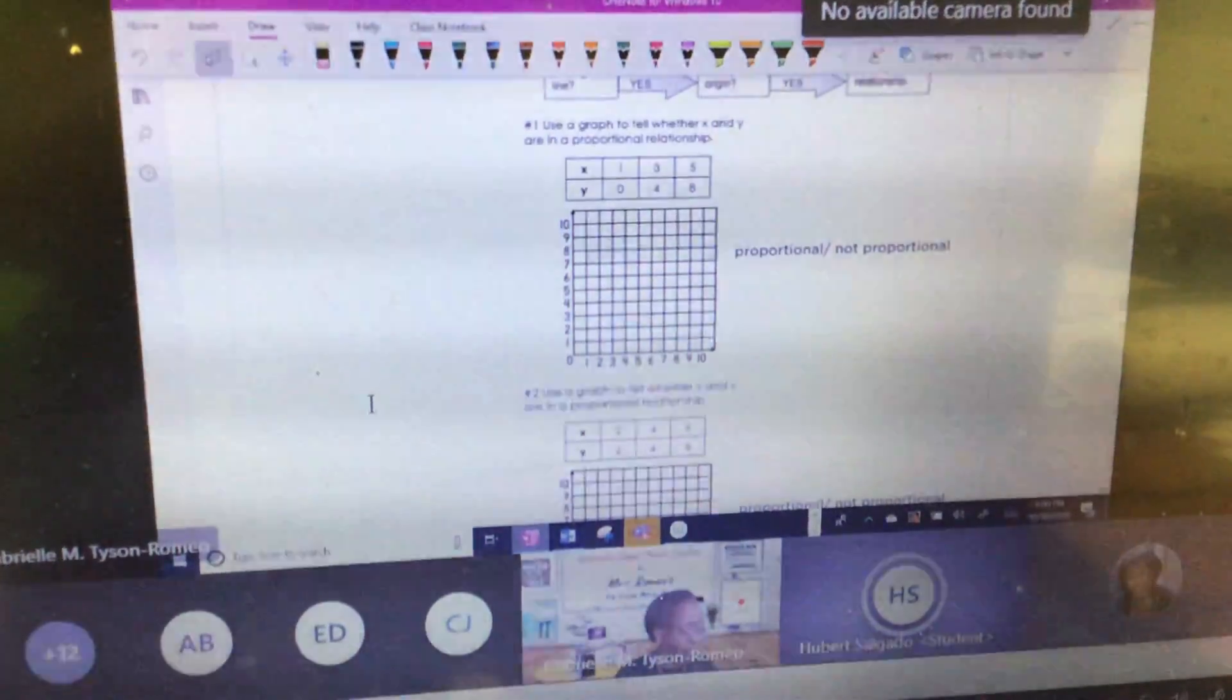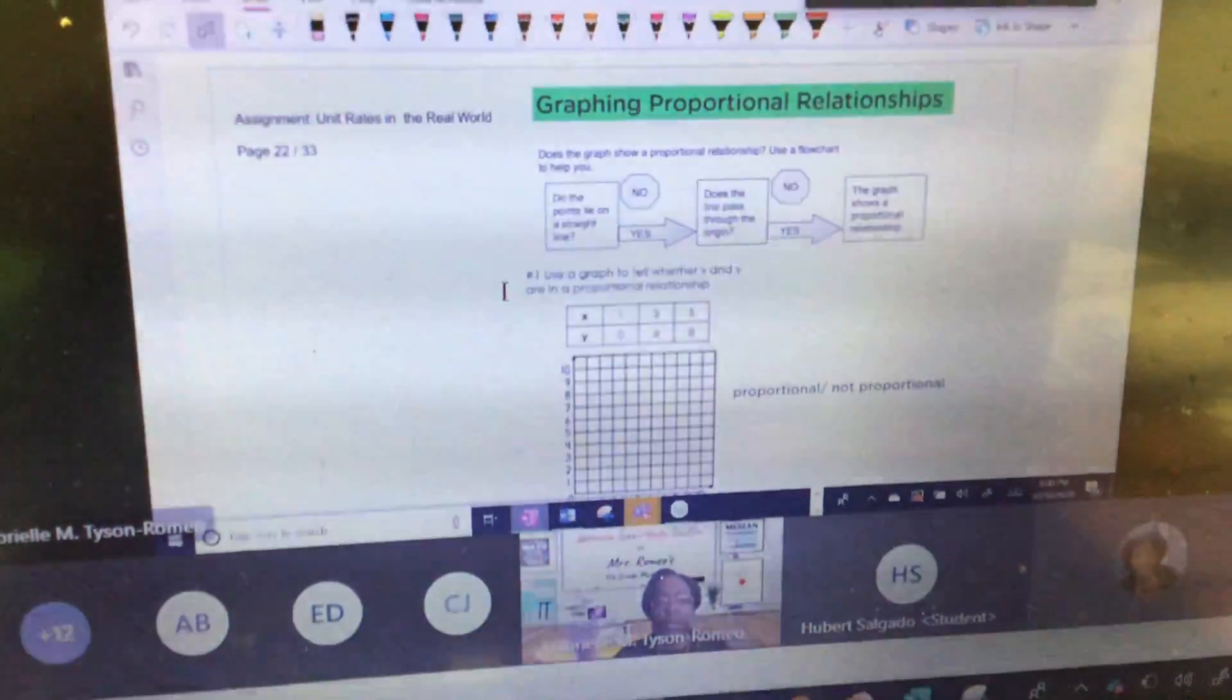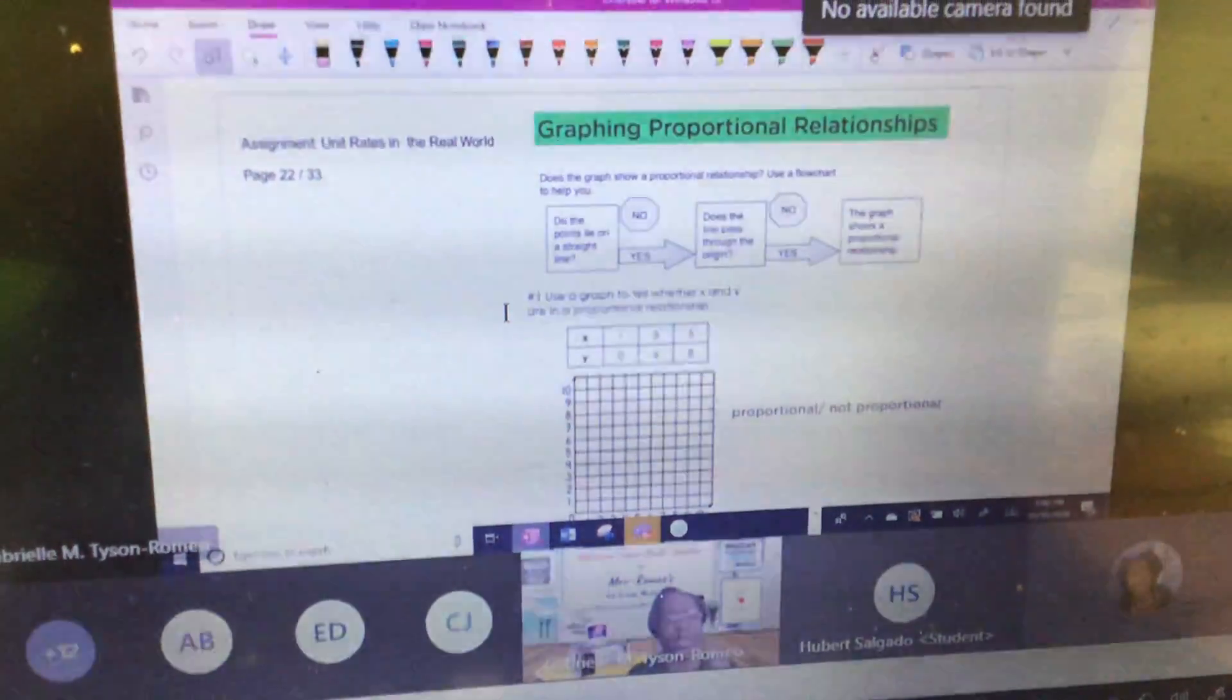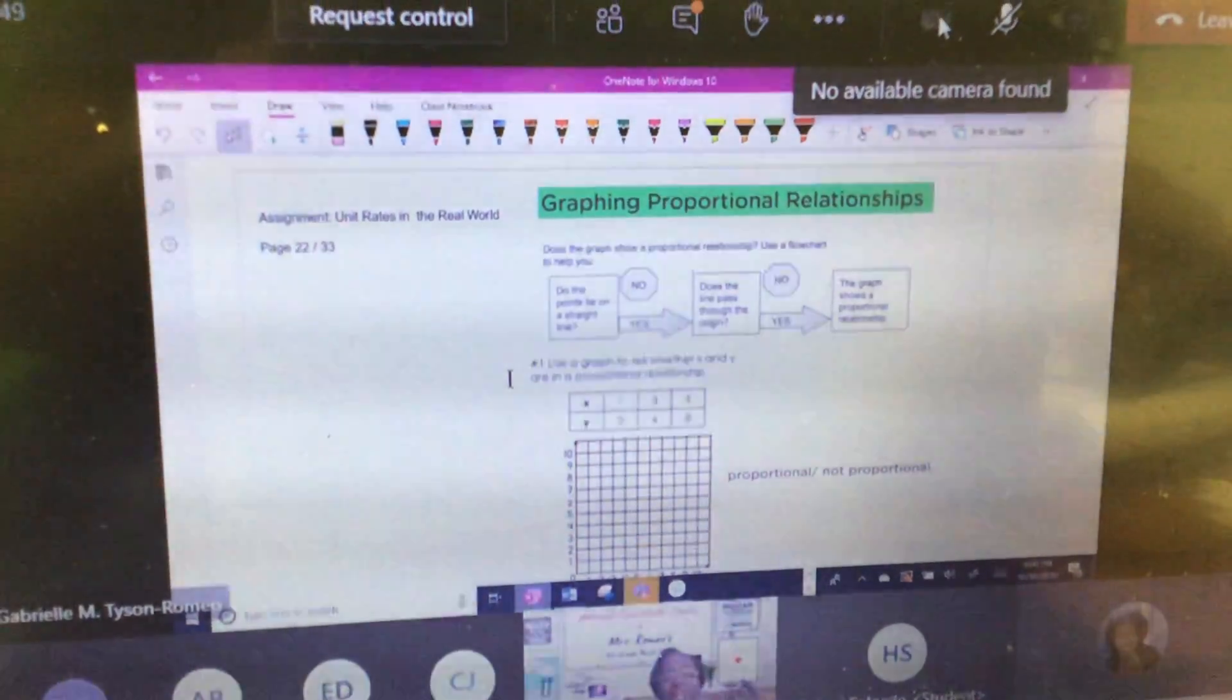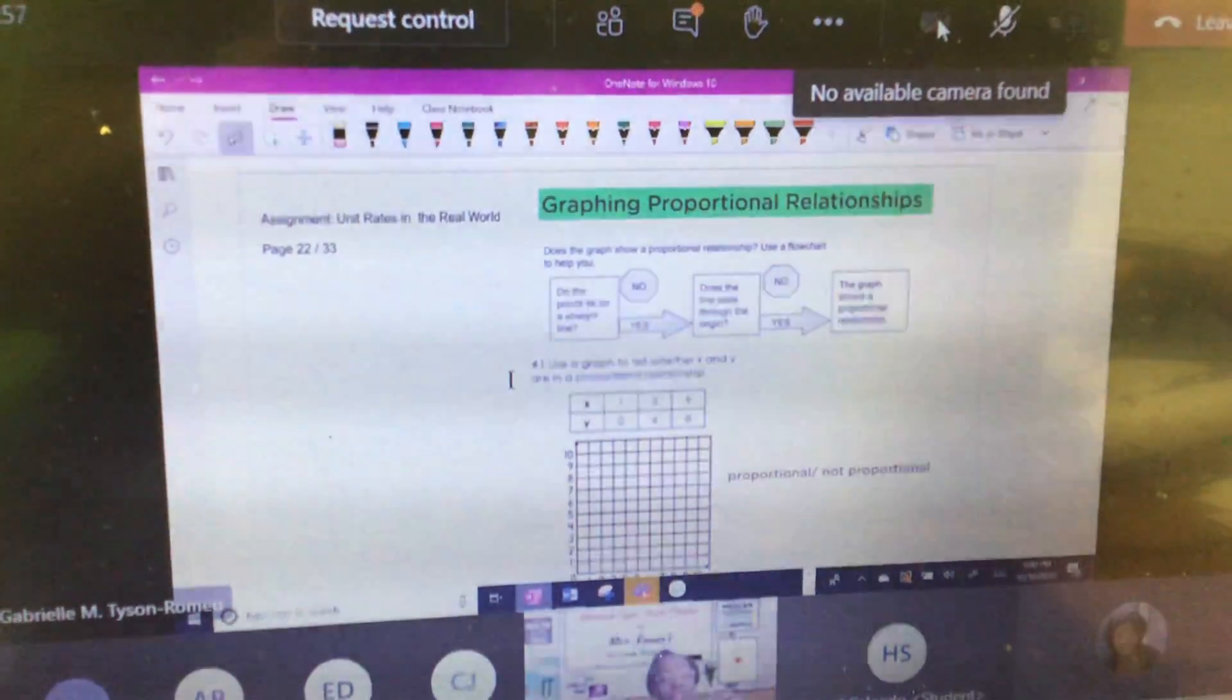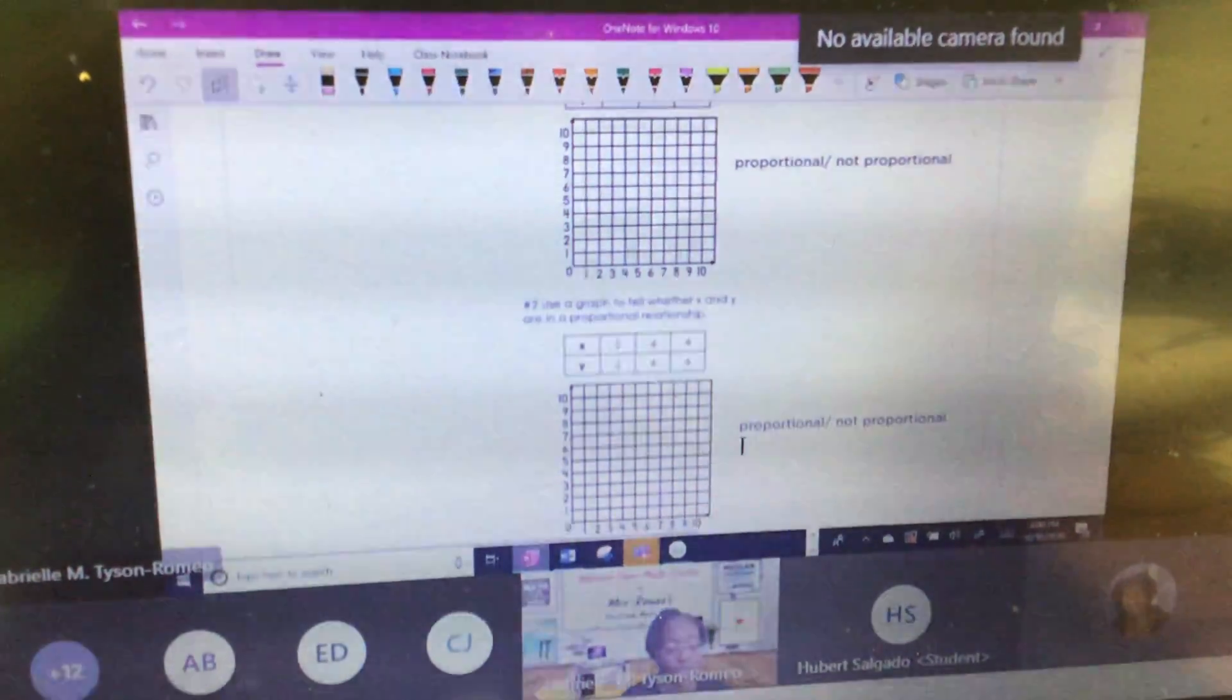We have three minutes, so I want you guys to go ahead and work on slide 22 on your own. Right here is a flowchart. If you're looking at a graph and you realize it has a straight line and it goes through the origin, what do you already know? It's proportional. What if it has a straight line but it doesn't go through the origin? It's not proportional. What if it goes through the origin but the line is curved? It's also not proportional. Go ahead and do numbers one, two, and three. Tell me what you come up with.